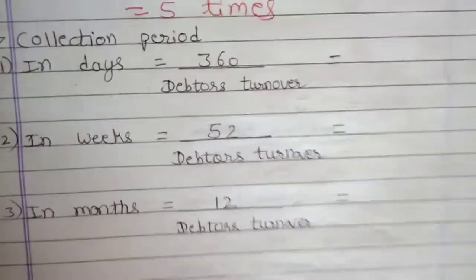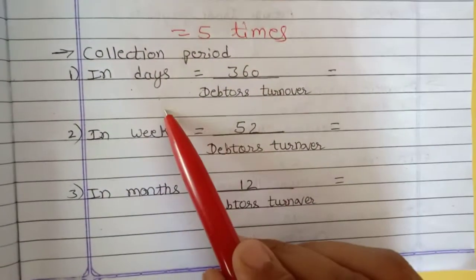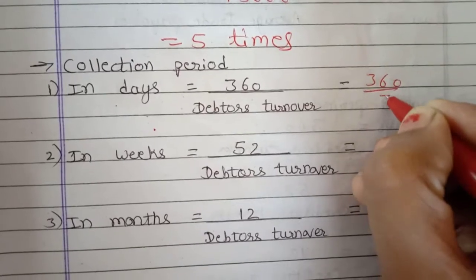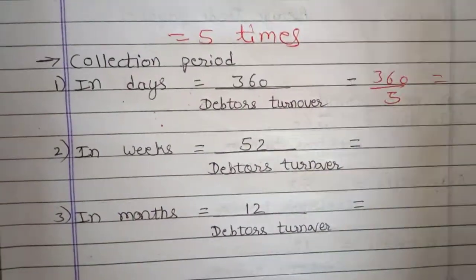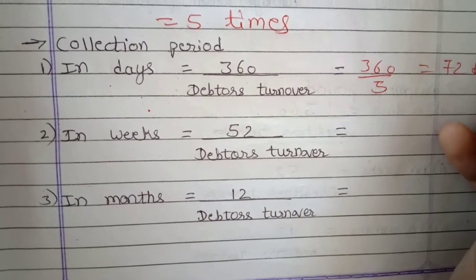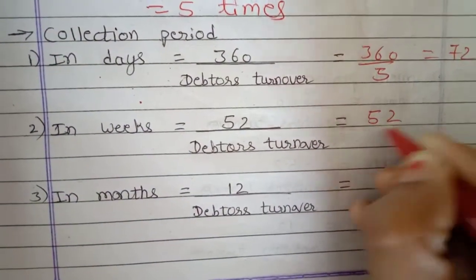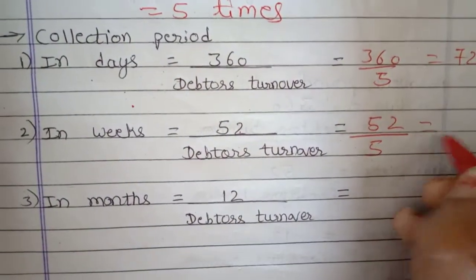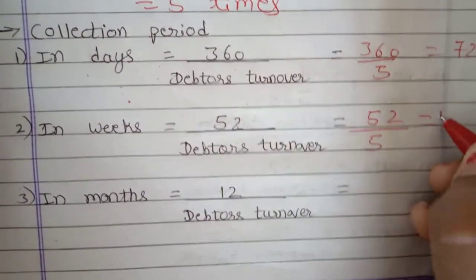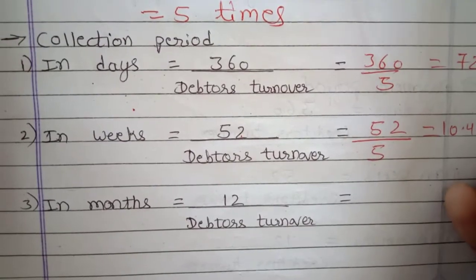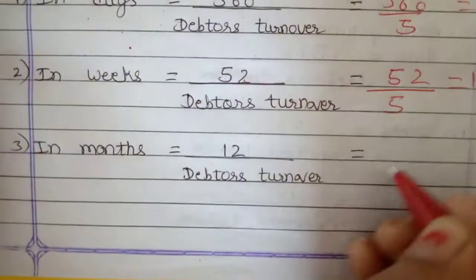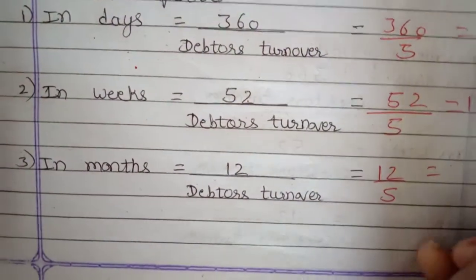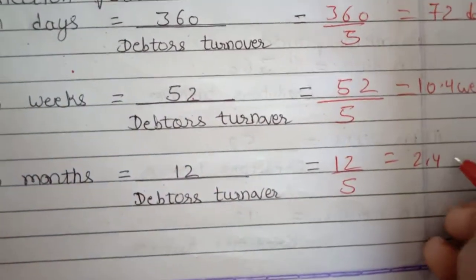Collection period: in days, 360 divided by debtors turnover of 5 equals 72 days. In weeks, 52 divided by 5 equals 10.4 weeks. In months, 12 divided by 5 equals 2.4 months.